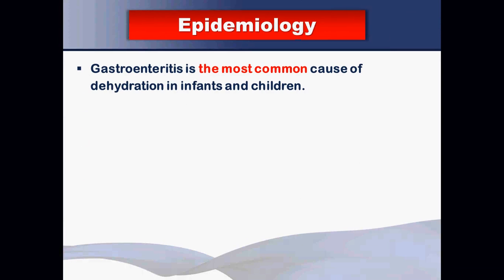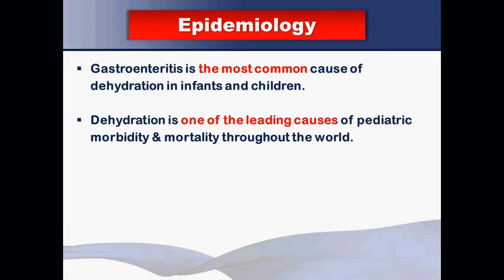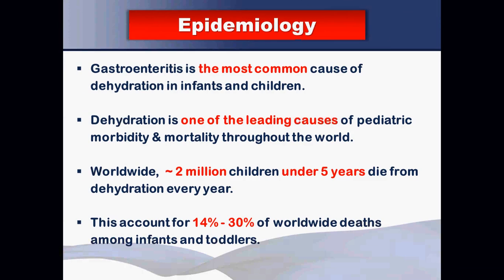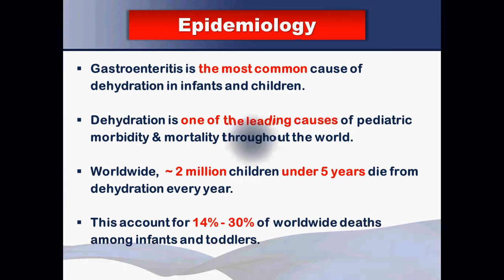Regarding epidemiology, gastroenteritis is the most common cause of dehydration in infants and children and is a leading cause of pediatric morbidity and mortality worldwide. About two million children under five years die from dehydration every year, mostly in resource-poor or developing countries. This accounts for 14 to 30% of worldwide deaths among infants and toddlers, underscoring the critical importance of knowing how to manage dehydration.